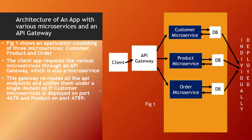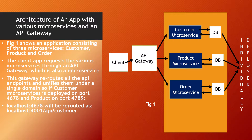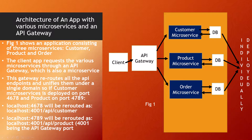So if the customer microservice is deployed on port 4678 and the product on another port, say 4789, then localhost:4678 for the customer microservice will be rerouted as localhost:4001/api/customer. And for the product, localhost:4789 will be rerouted as localhost:4001/api/product — assuming 4001 is the API gateway port.